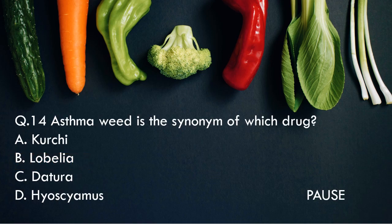Question 14: Asthma Weed is the synonym of which drug? It is the most important question. Option A, Kurchi. Option B, Lobelia. Option C, Stramonium. And option D, Hyoscyamus. And the right answer is Lobelia. So Asthma Weed is the synonym of Lobelia.